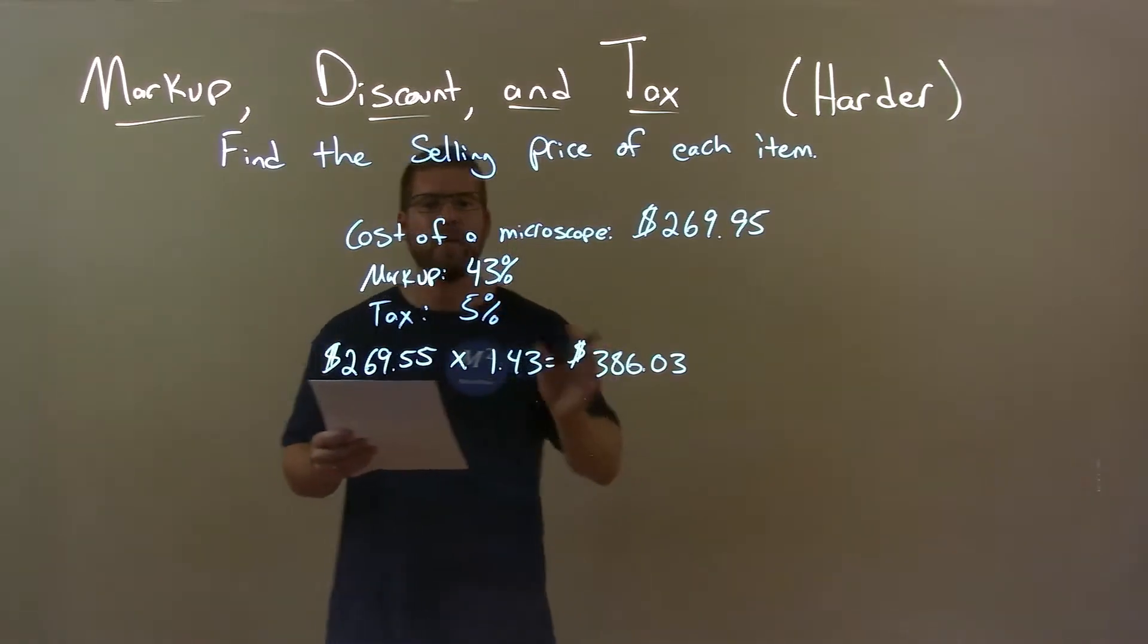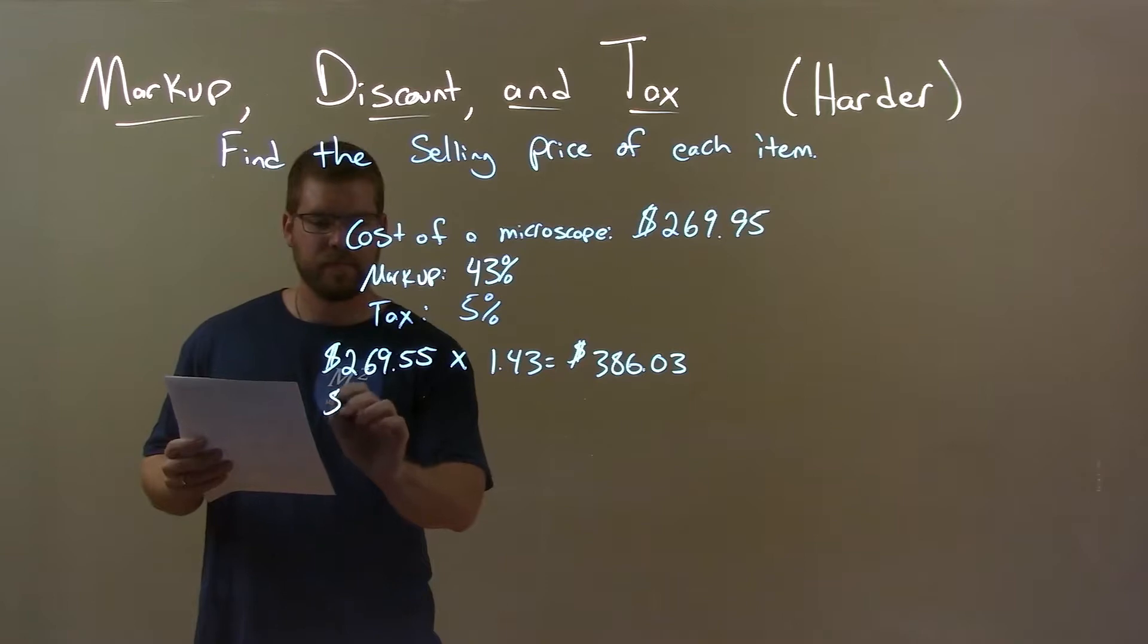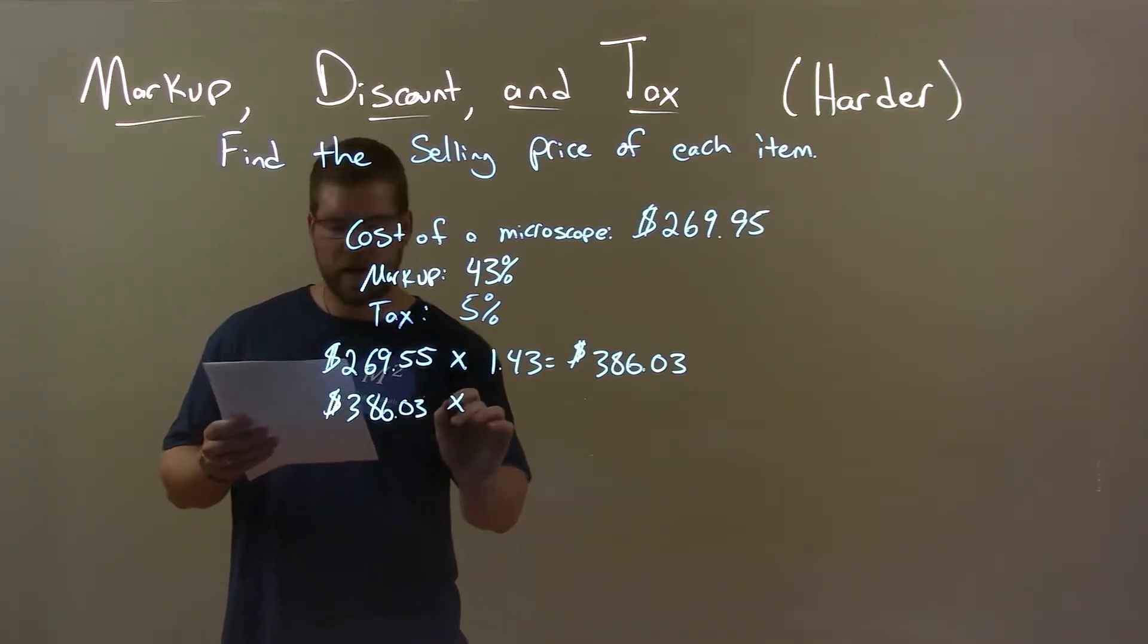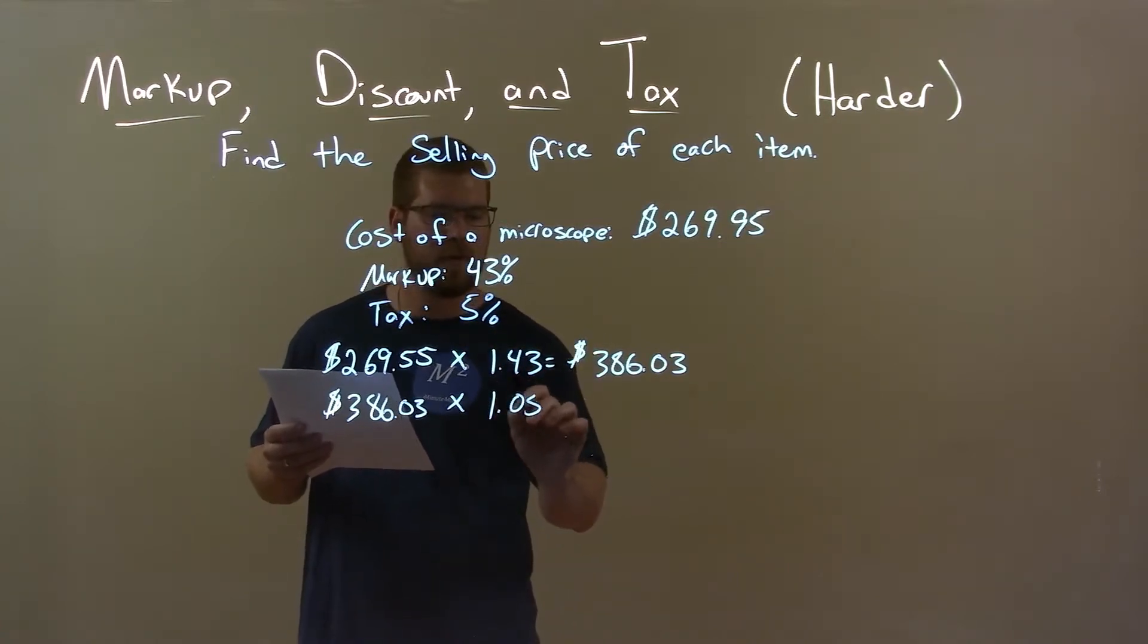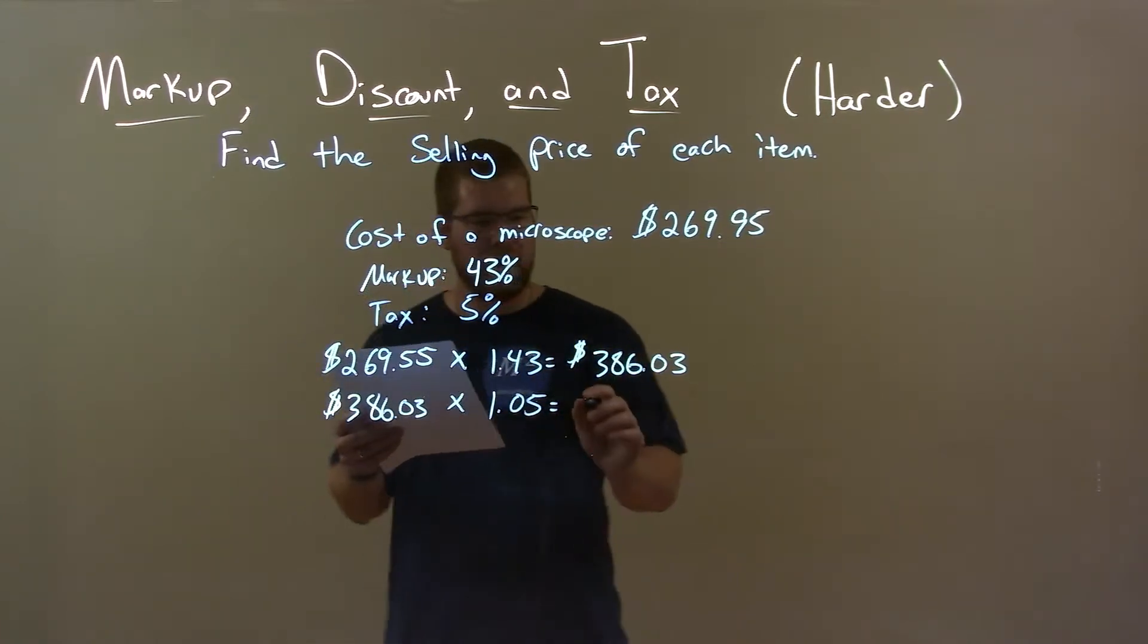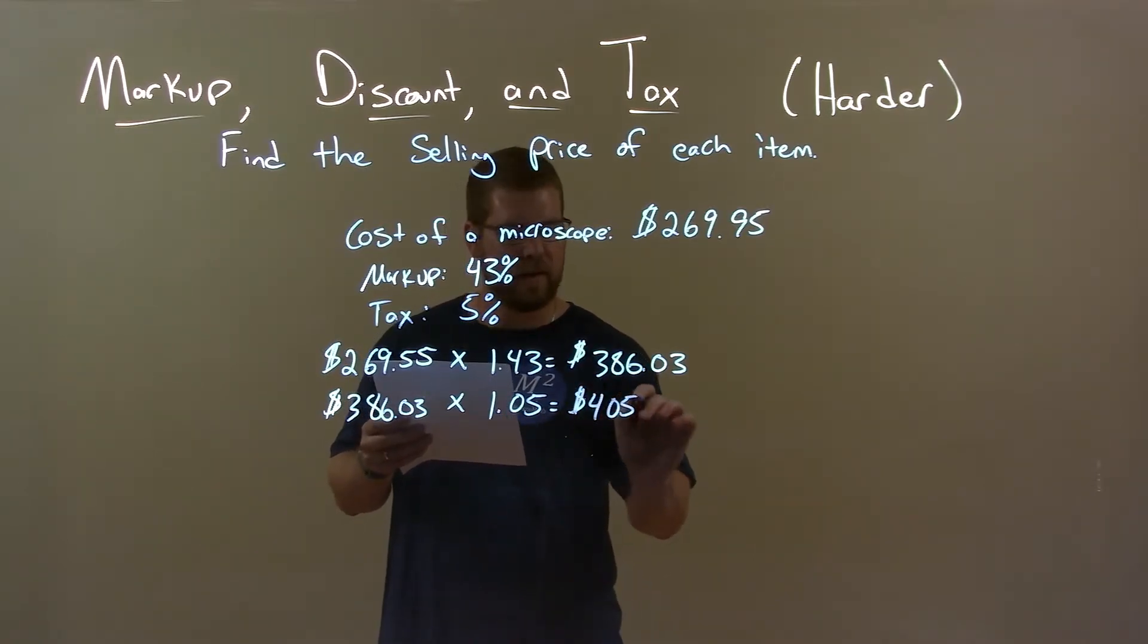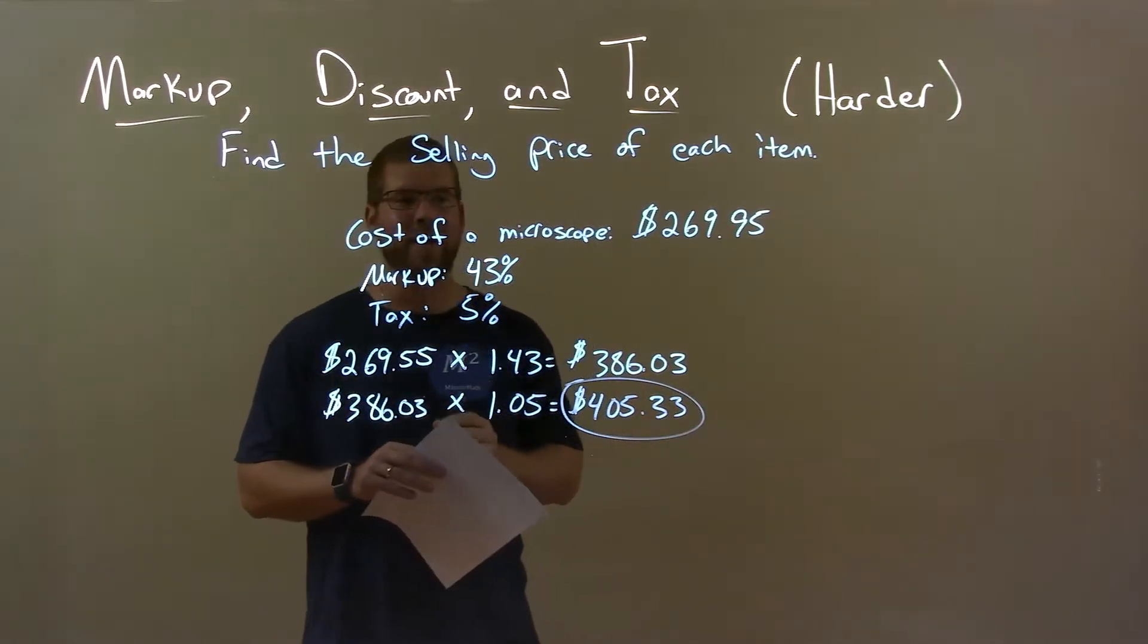Then we have to deal with the tax. We take that $386.03 and multiply that by a 5% increase for the tax. So, 1.05 represents that, and we get an answer here of $405.33, and that's our final sale price for the microscope.